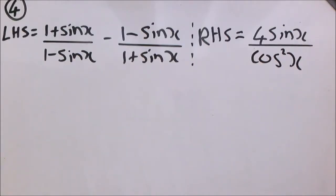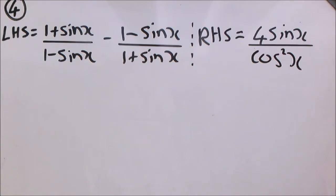Number 4 looks intimidating but this is really an easy question, and you will see what I mean when we are done with the process. The right hand side is the simpler side of the two, so we are just going to leave it as is. We are going to work with the left hand side. One of the basic principles we can follow every time is to work towards a common fraction — just one single fraction by using a lowest common denominator.